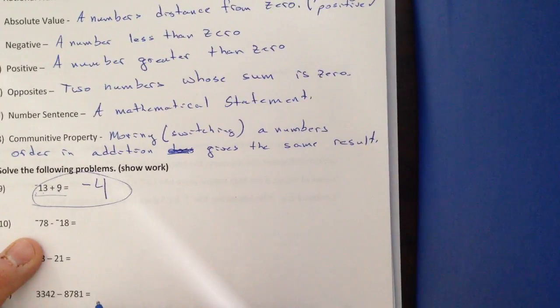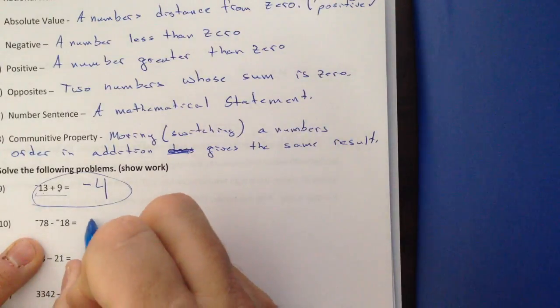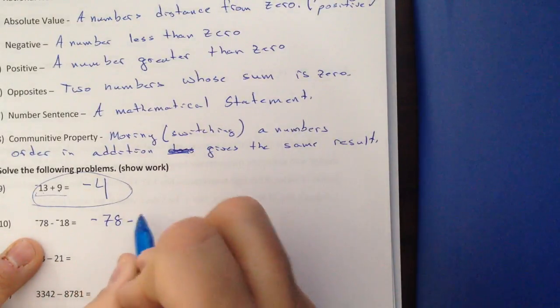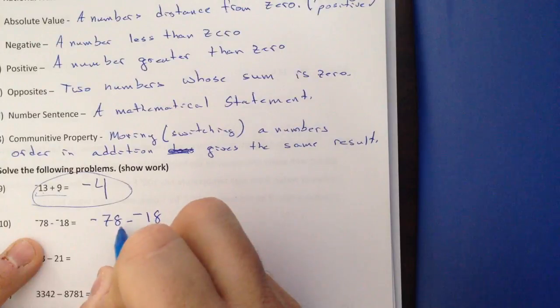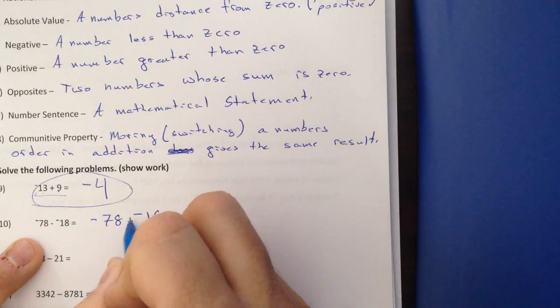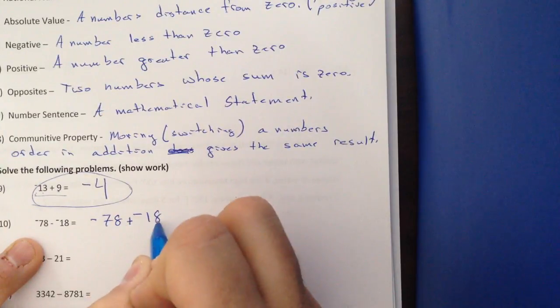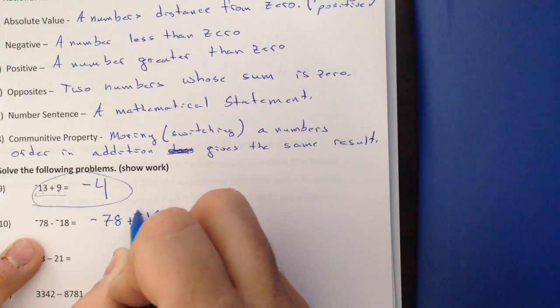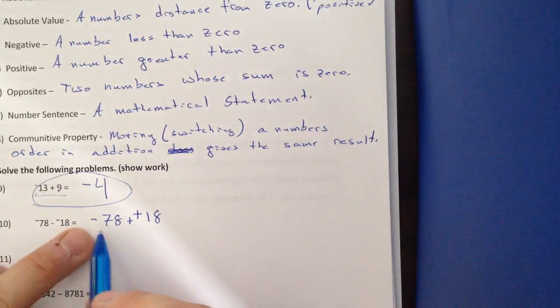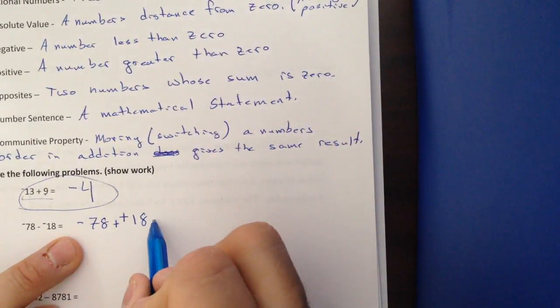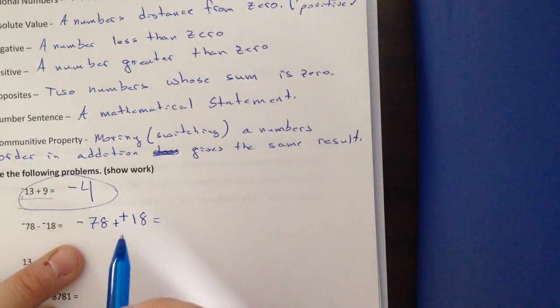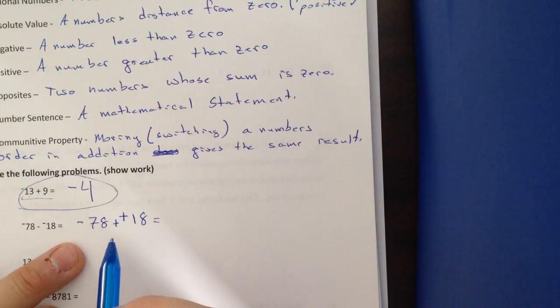Number 10, our rule for subtraction. Change to addition. So I have negative 78 minus negative 18. Add the opposite. Add, change to addition. And whatever follows, you change the sign. If it's positive, you make it negative. Or in this case, it's negative, I make it positive.